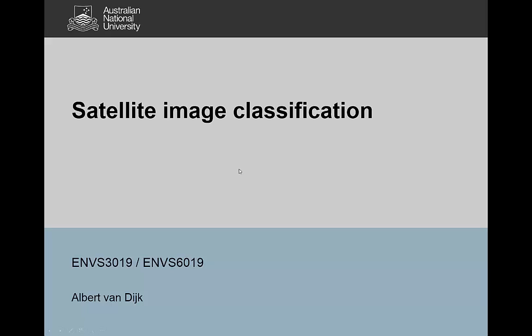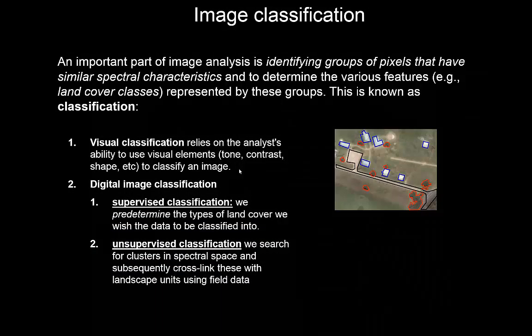Hi, this is Albert van Dyken. In this video I want to talk about satellite image classification, because that is one of the more common uses of satellite imagery — to identify objects or different land cover types on the earth and produce maps of those different units or objects.